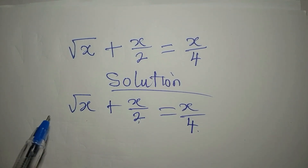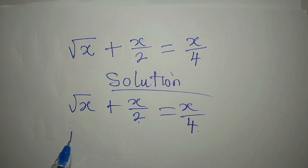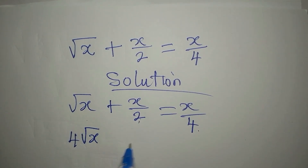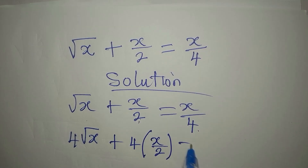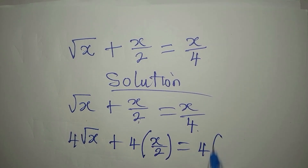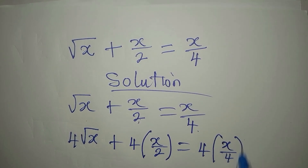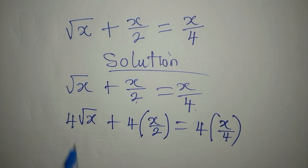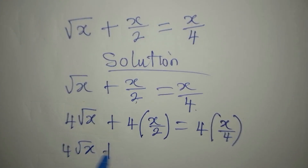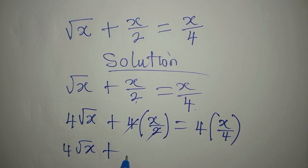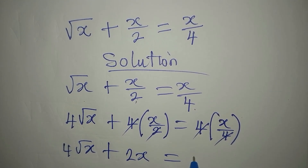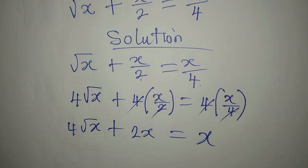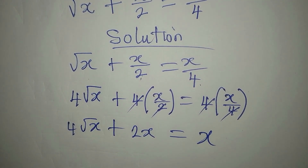We'll have four multiplied by root x, plus four multiplied by x over two, equals four multiplied by x over four. That gives us four root x plus two x equals one x.